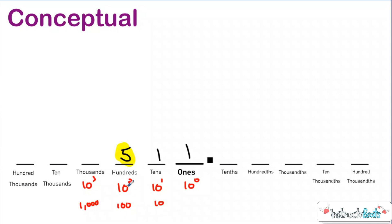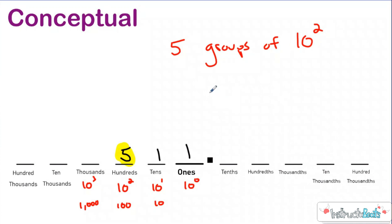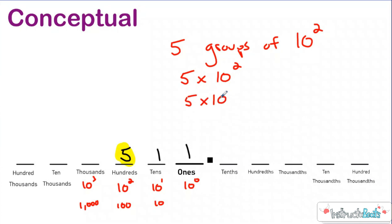So 10 to the second power is the second position to the left of the ones place. We know that's equal to 100. And what the digit 5 is telling us is we have five groups of 10 to the second power — that's what digits tell us. So we have five groups of 10 to the second power, which is really five times 10 to the second power, because multiplication is groups of repeated addition. We know that 10 to the second power is 100, so if you had five groups of 100, that five is really worth 500.